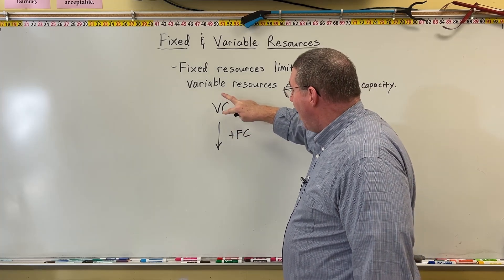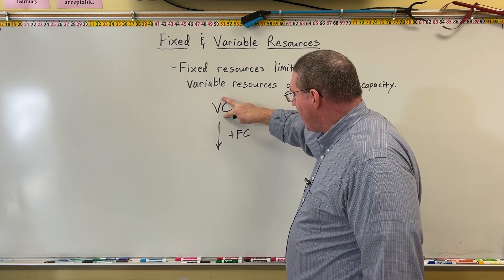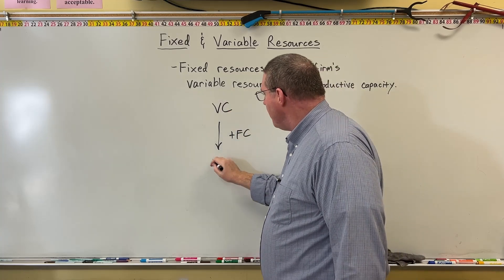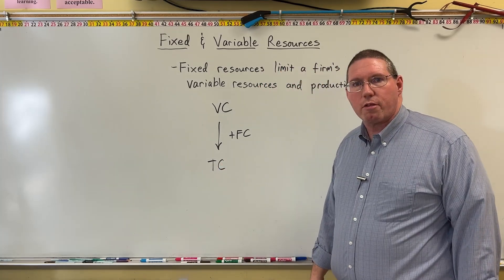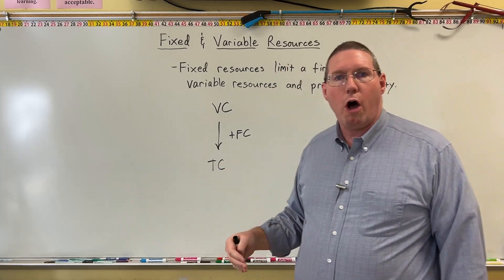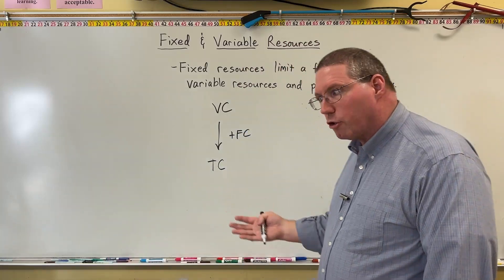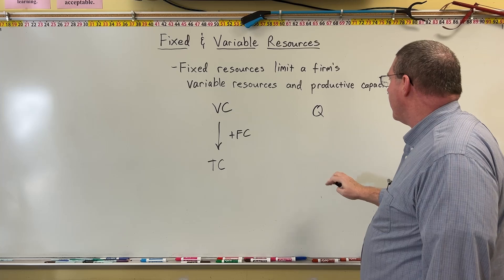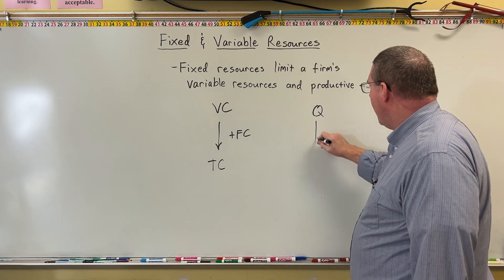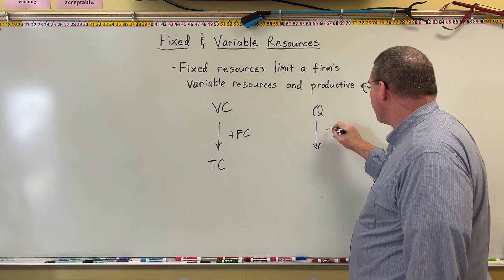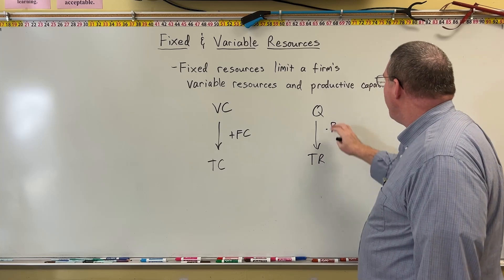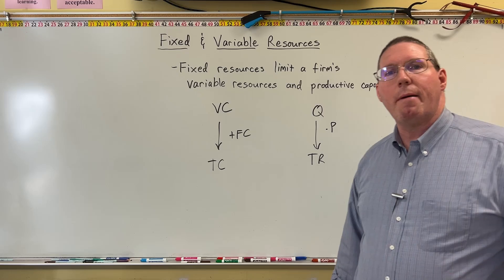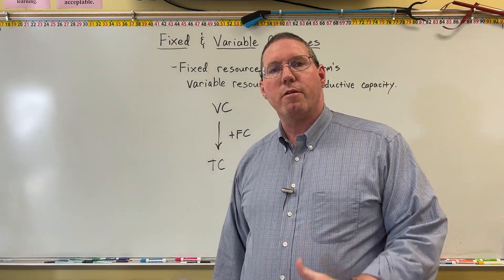Variable costs have a limit — there's a maximum amount of variable costs that the company can incur. Their fixed costs don't change, which means there's a limit on their total costs. Similarly, productive capacity is a quantity, so quantity is limited. And because quantity times price equals total revenue, productive capacity puts a limit on total revenue. There is a maximum amount of total revenue that a business can actually reach.